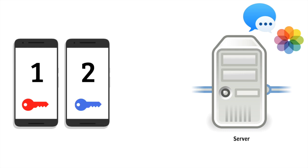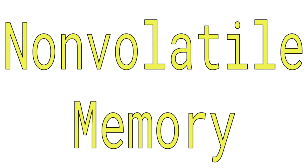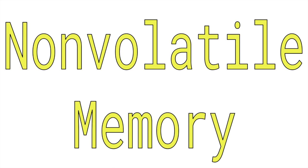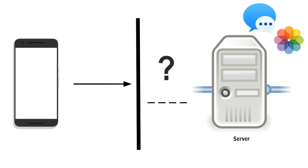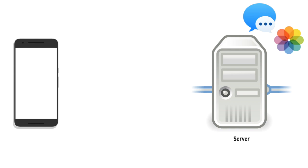These keys are stored in non-volatile memory, which just means that the key won't be lost even if the device is turned off. When a device wants to send information to the server, the server first asks the device for its key. If it responds appropriately, a channel is established, and the device and server can communicate.